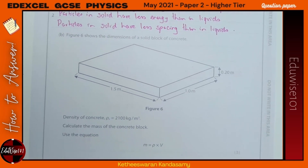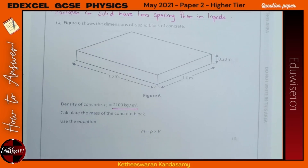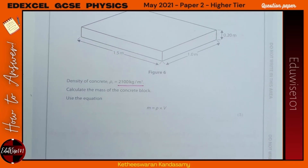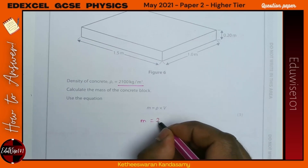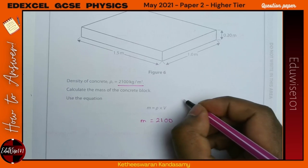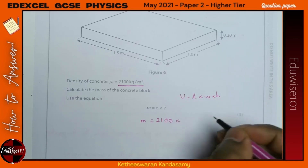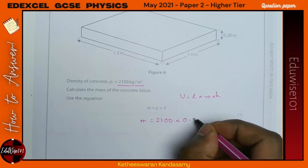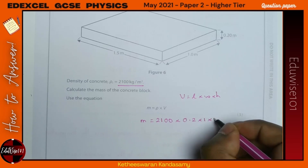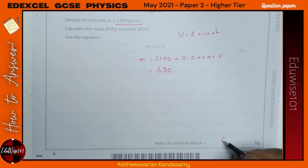Figure 6 shows the dimensions of a solid block of concrete. The density of concrete is 2100 kg/m³. Calculate the mass using the given equation — mass = density × volume, where volume = 0.2 × 1 × 1.5. That gives a mass of 630 kg.